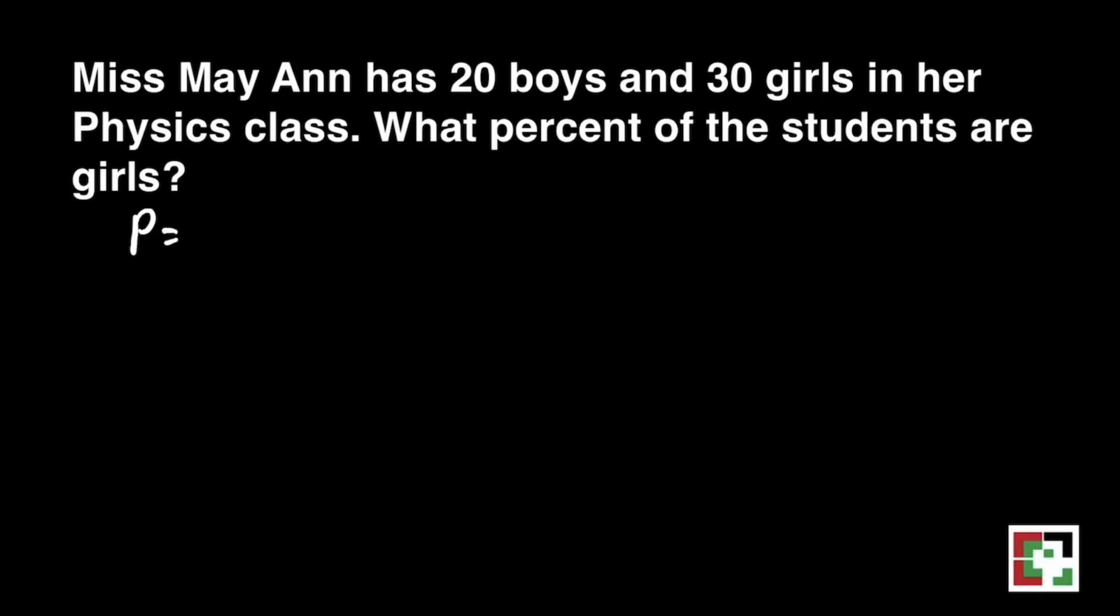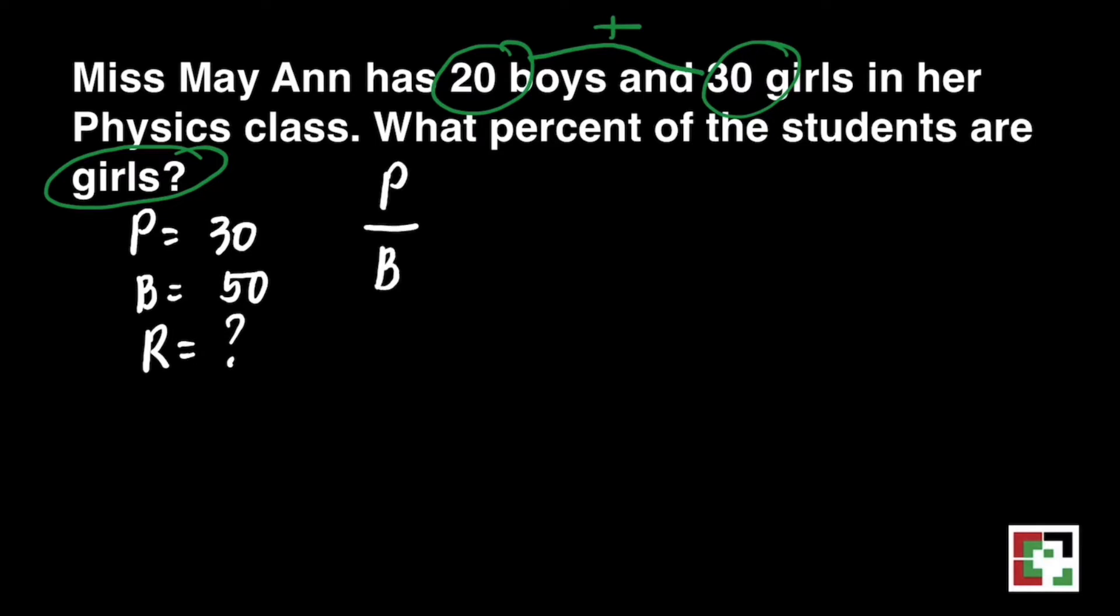We will first identify our percentage, base, and rate. For the percentage, we're looking for the number of girls that are part of the class, and that is 30. Our base is 50 because we have to get the sum of 20 boys and 30 girls, and we're looking for the rate. We'll use the formula, percentage over base is equal to rate over 100.